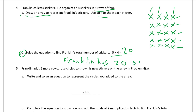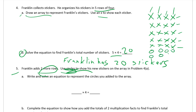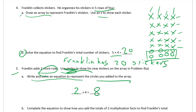Now part five: Franklin adds two more rows. Use circles to show his new stickers. Write and solve an equation to represent just the circles we added to the array. That's two rows of four, so two times four equals eight stickers that he added.